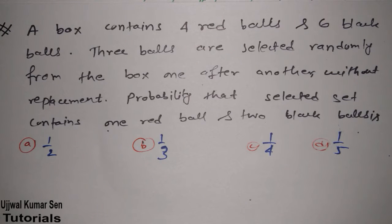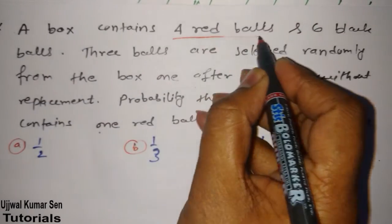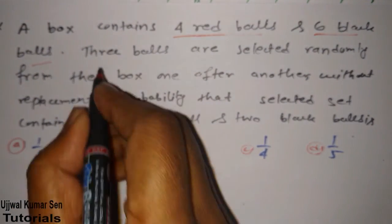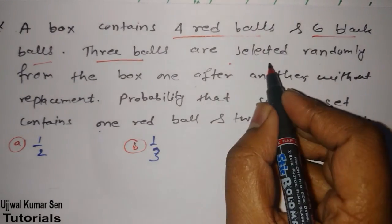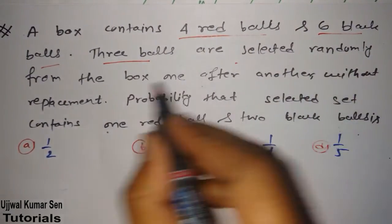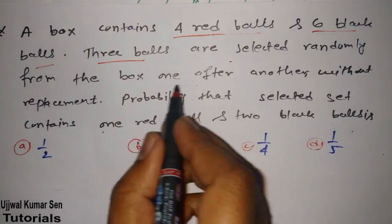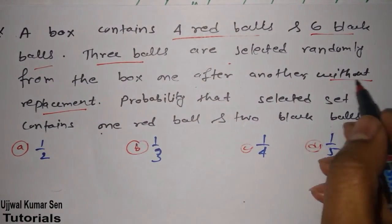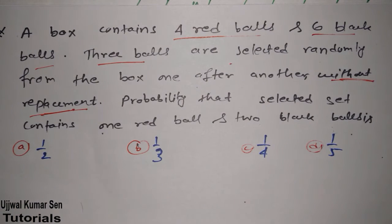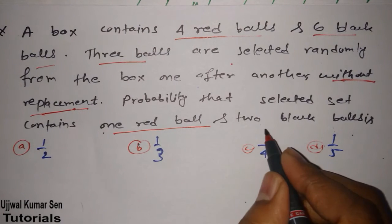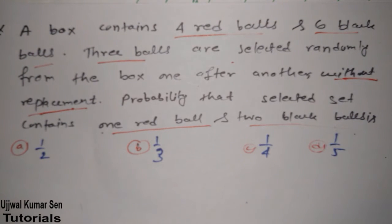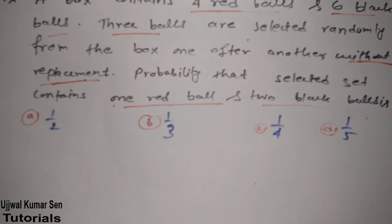Right now let's go for this question. What is this question exactly asking us to find out? In this question they said a box contains four red balls and six black balls. So just underline these two things. Three balls are chosen randomly, selected randomly from the box one after another without replacement. This is another key factor. Probability that selected set contains one red ball and two black balls.